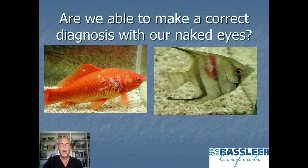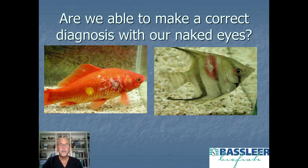When talking about fish diseases, we can ask the question: are we able to make a correct diagnosis with our naked eyes? Can you see on these two fish what disease it is? I can't, because I need diagnostic tools. On the left, this goldfish has a viral infection. On the right, this fish looks like it has an ulcer, but it's actually a parasitic infection.